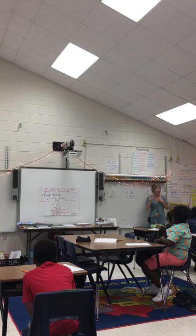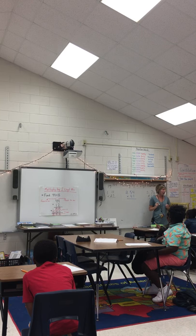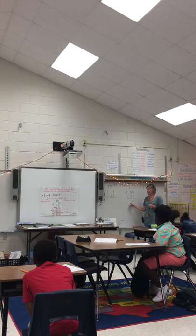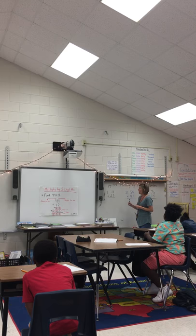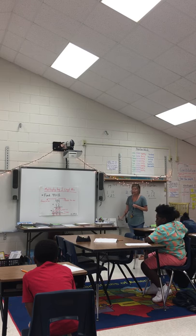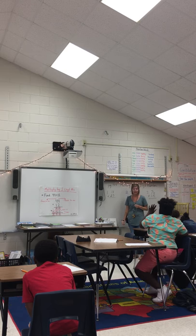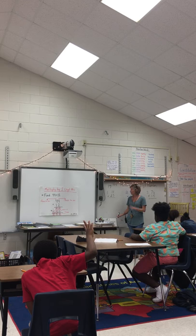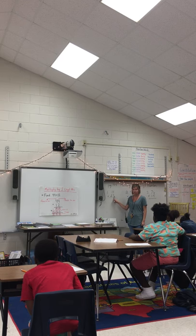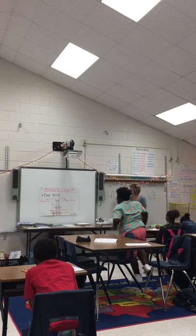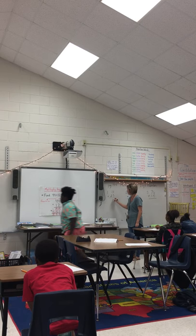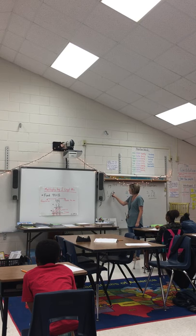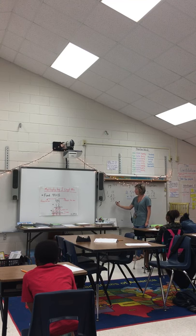I'm going to say every step as I solve number one, and you all are going to help me with numbers two and three. I have 11 times 23. The first thing I do is multiply: 3 times 1 is 3, and 3 times 1 is 3. Now I'm going to move down — I have to add my zero.